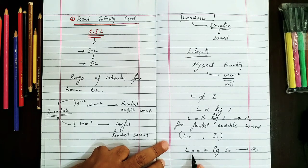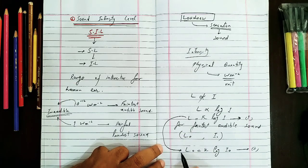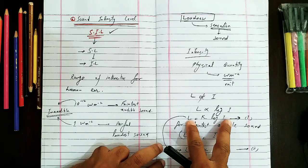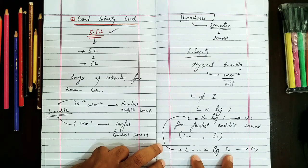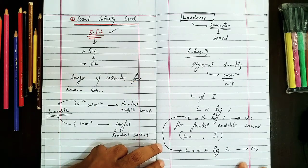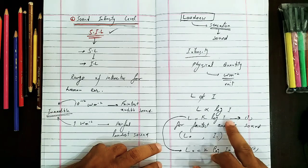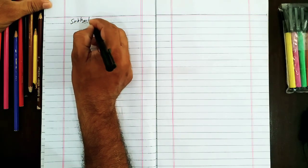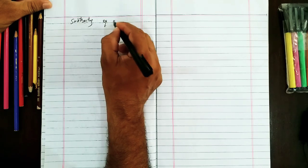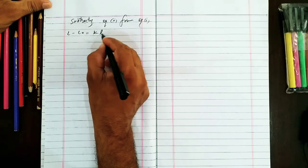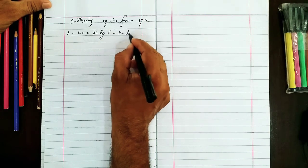The difference of L and L0 is called the sound intensity level. So for any unknown sound's loudness this equation has been created. I will subtract equation 2 from equation 1, giving: L minus L0 equals k log I minus k log I0.